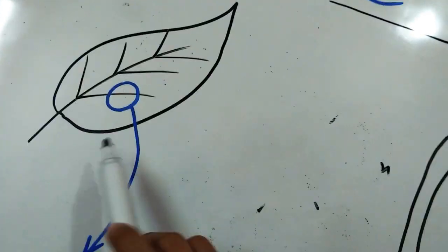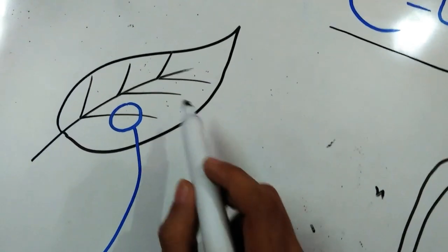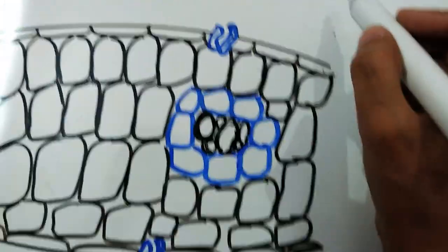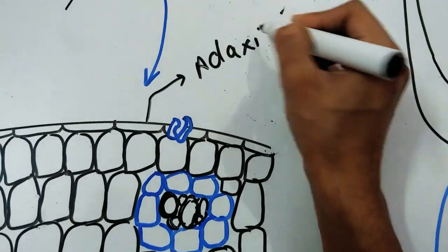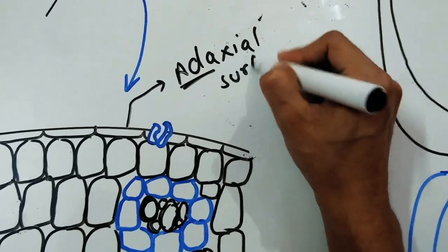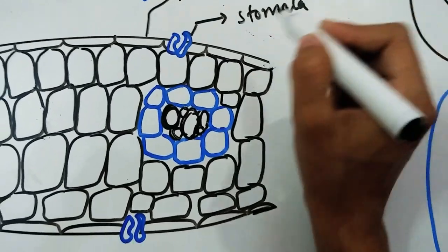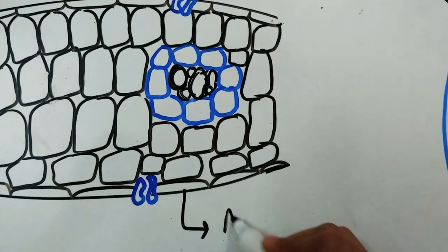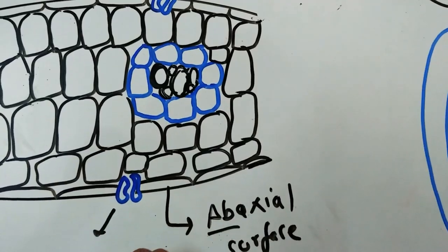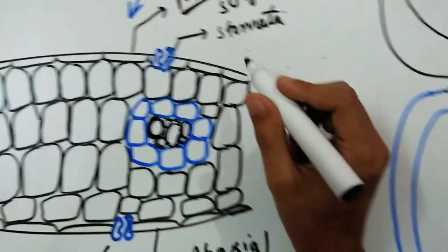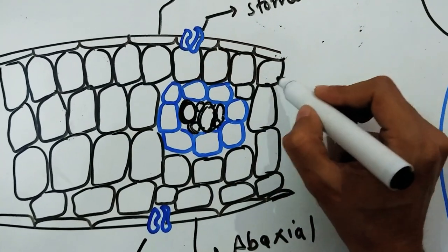Let us imagine a leaf. We know that a leaf has two surfaces — the upper surface and the lower surface. I have tried to magnify a section of this leaf here. The upper surface of the leaf is called the adaxial surface or adaxial epidermis. This is your stomata or guard cells. The lower surface of the leaf is known as the abaxial surface — lower is abaxial and upper is adaxial. These are again stomata or guard cells.